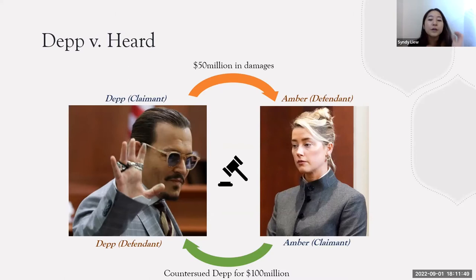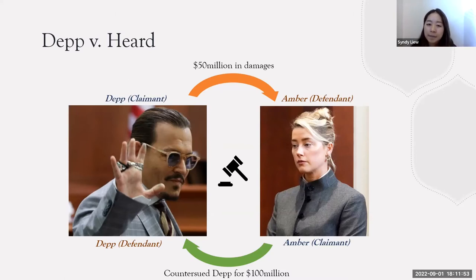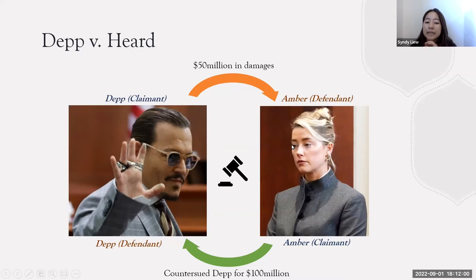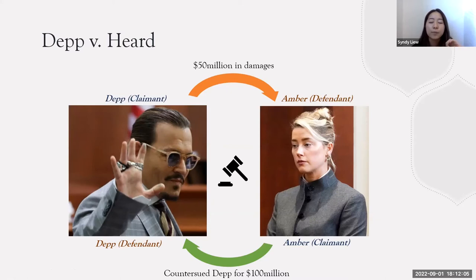When Johnny Depp is suing Amber Heard, Johnny Depp is the claimant because he's making a claim against Amber Heard. When Amber Heard is filing a claim against Johnny Depp, Amber will be the claimant and Johnny Depp will be the defendant.